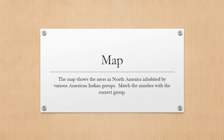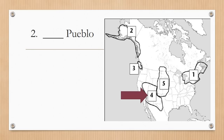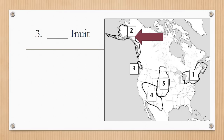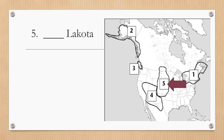Now let's go to the map. The map shows the areas in North America inhabited by various American Indian groups — match the number with the correct group. Number one: Iroquois. Number two: Pueblo. Number three: Inuit. Number four: Kwakiutl. Number five: Lakota.